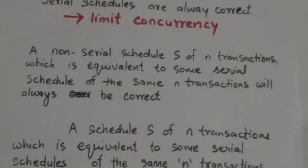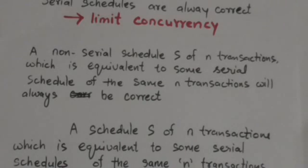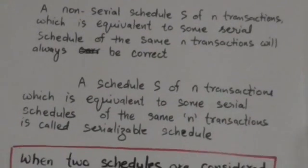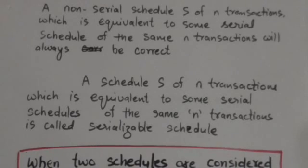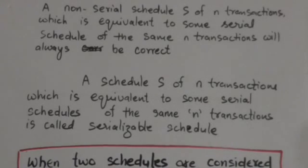A non-serial schedule of N transactions which is equivalent to some serial schedule of the same N transactions will always be correct. A schedule of N transactions which is equivalent to some serial schedule of the same N transactions is called a serializable schedule.